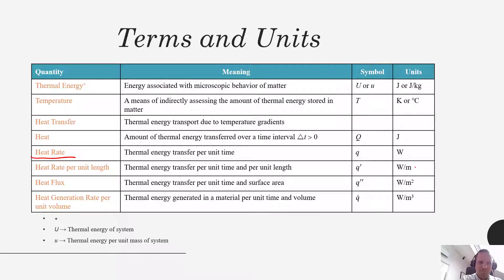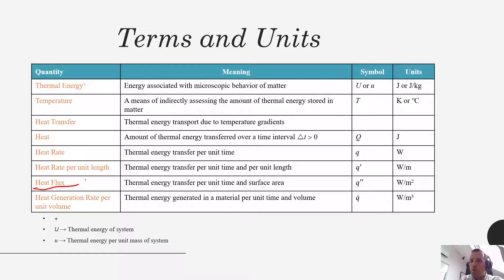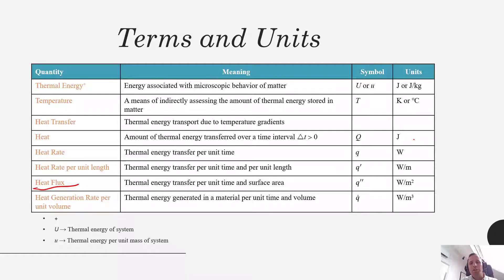Another useful term is the heat flux — the thermal energy transfer per unit time and per surface area. If we have a really big and tall wall, we could think about how much heat is going through that wall in total, which again would be q in watts. Or, assuming heat transfer is happening uniformly, instead of looking at the entire wall we could look at just one square meter of the wall. The heat flux is something we'll use quite a lot in this class. We'll designate it as q double prime, and it has units of watts per meter squared.